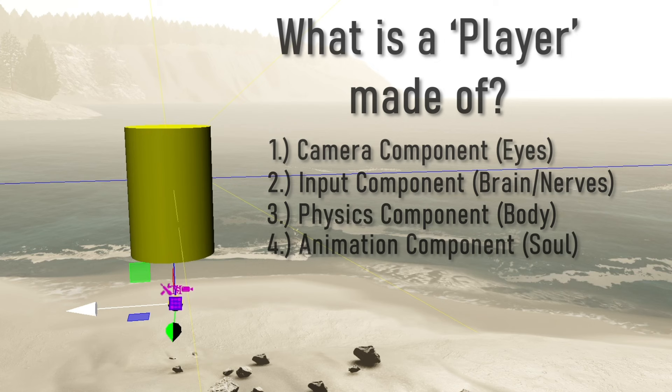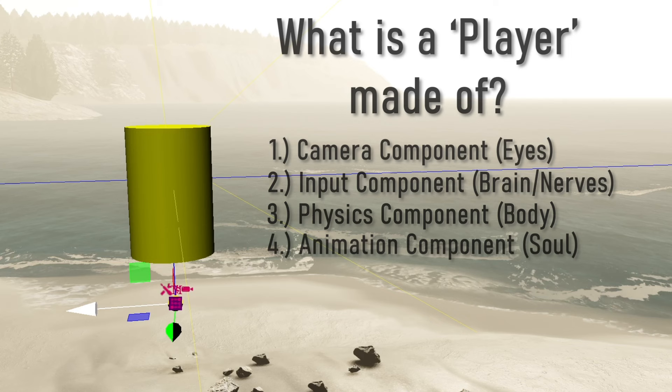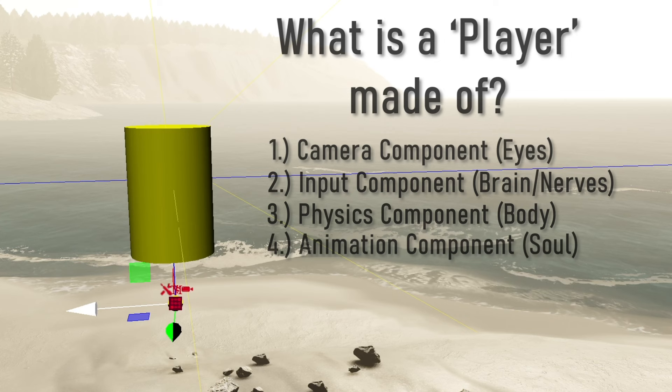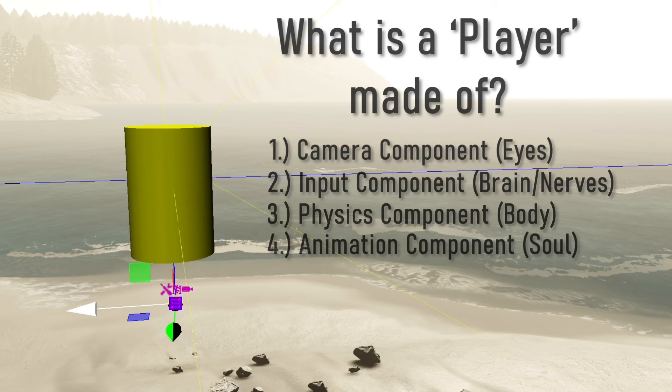We also have the animation component, which is close to the physics component but more nuanced. First-person games don't generally need an animation component — you can just have a camera as your head. It's not the player walking, it's how the player walks: the style, the personality, the animation. Let's get started.